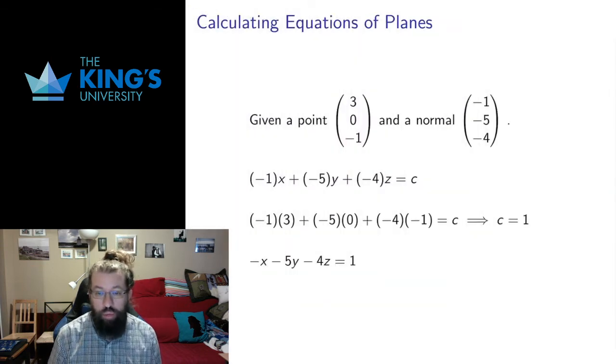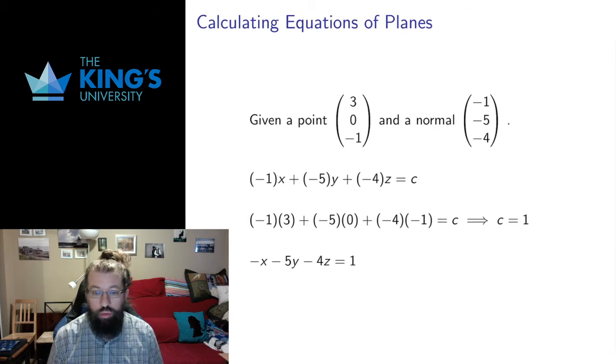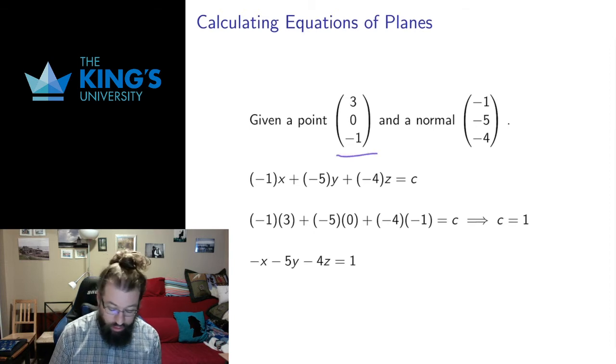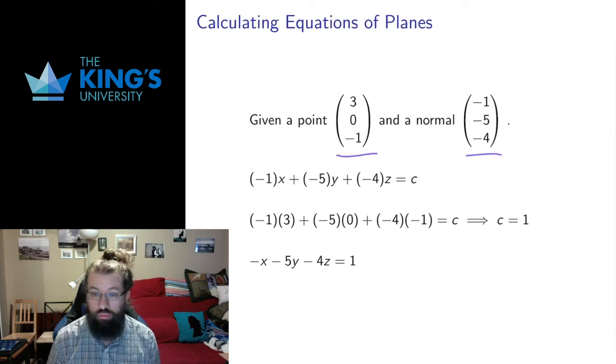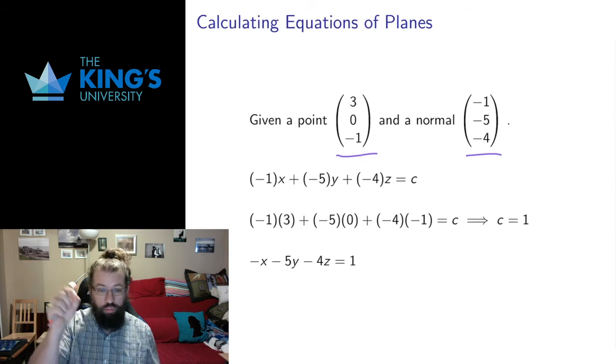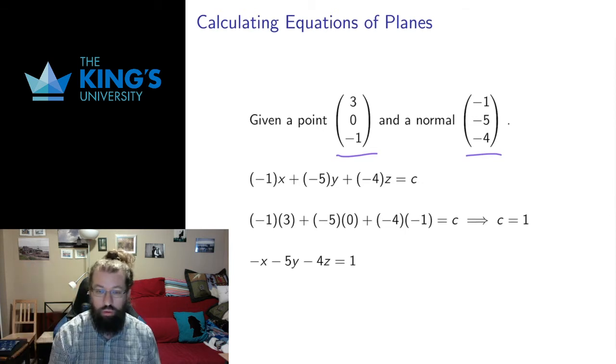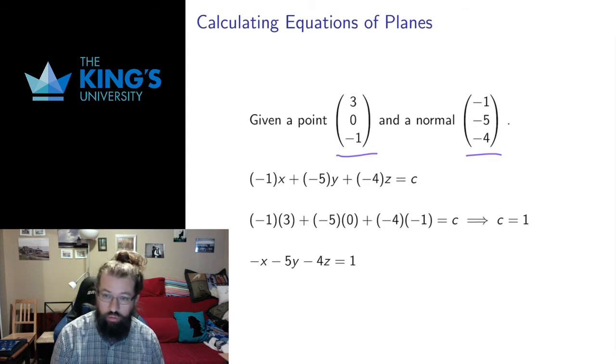That's the setup. How do we actually do the calculation? I'm going to do it in three ways, given three different pieces of information. The easiest way to describe a plane is to give a point and normal. So I have a plane that goes to this point that is perpendicular to some local direction. What's the plane that goes to the point (3, 0, -1), and it's perpendicular to (-1, -5, -4).